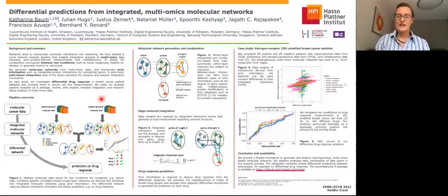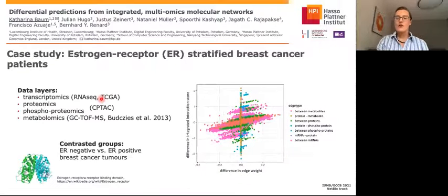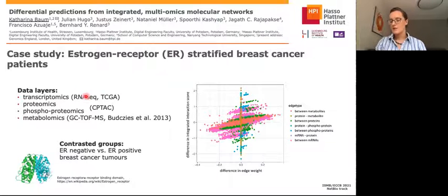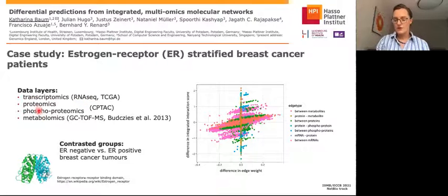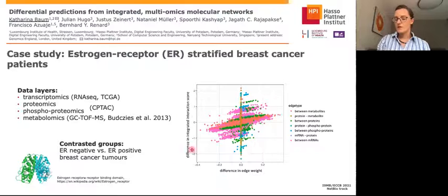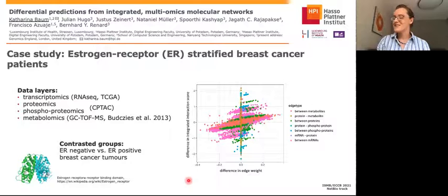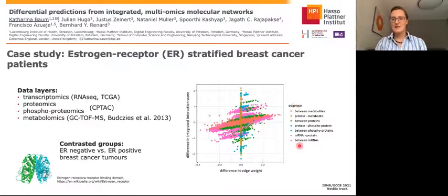I also brought you a case study. We used estrogen receptor stratified breast cancer patients. We have many samples: around 200 samples for each condition for RNA-seq, 68 or 40 samples for proteomics and phosphoproteomics, and also 60 samples for metabolomics from yet another study. What I showed you here is how the edge weight compares to the integrated interaction scores — you see that they are related but not identical. The differential network is characterized by seven different types of edges, either between layers or within the four layers.